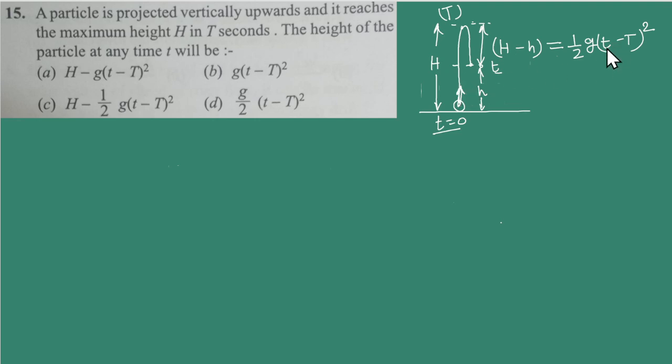So the time remaining to cover this distance H minus small h will be t minus capital T, because this capital T already covered to cover this distance capital H. So this H minus small h will be equal to half g (t minus capital T) whole square. If you are finding this small h, it will be capital H minus 1 by 2 g (t minus capital T) whole square. So B is the correct option.